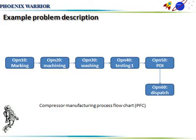Now let's look at a Compressor Manufacturing Process Flow chart for a specific company. The first process is operation number 10. Operation numbers increase in increments of 10 — 10, 20, 30 — for better visibility. The first operation is marking — the product is manufactured, with a date and year of manufacture recorded.